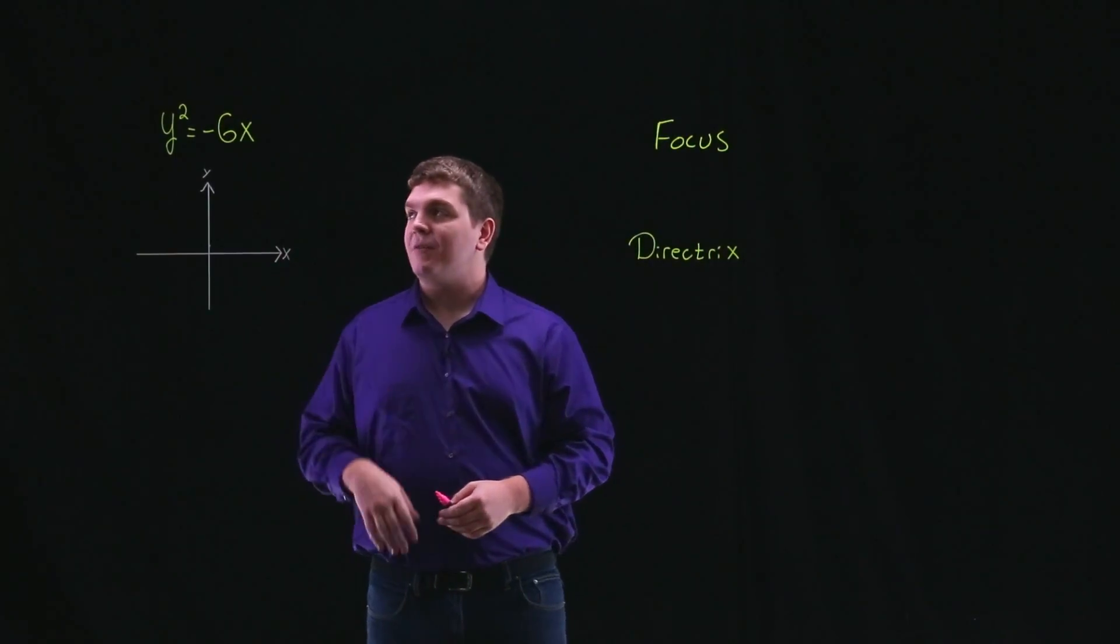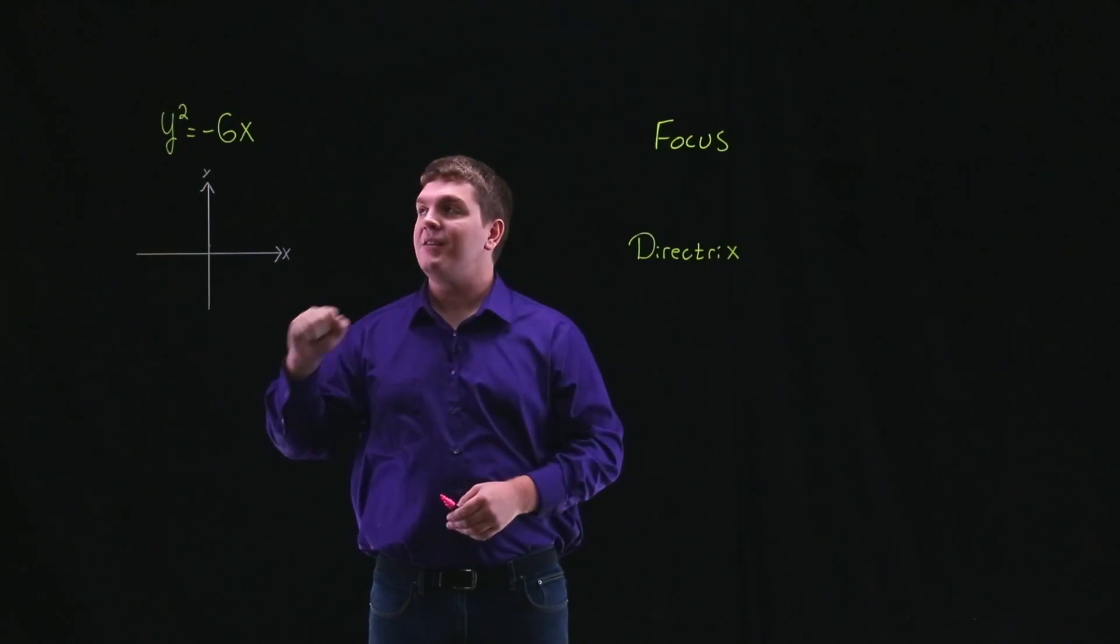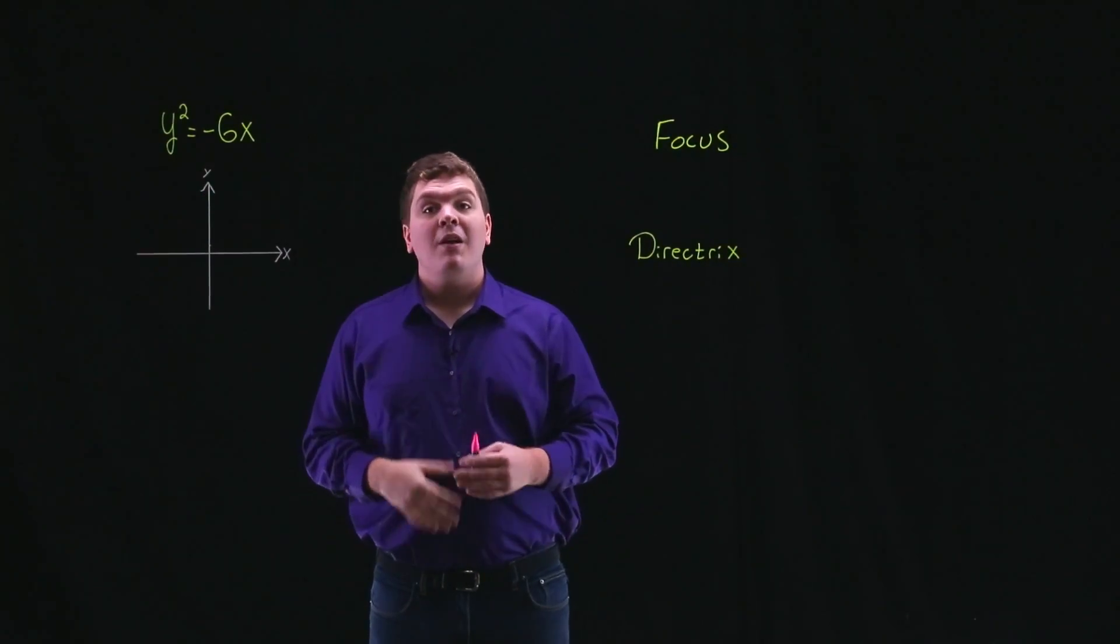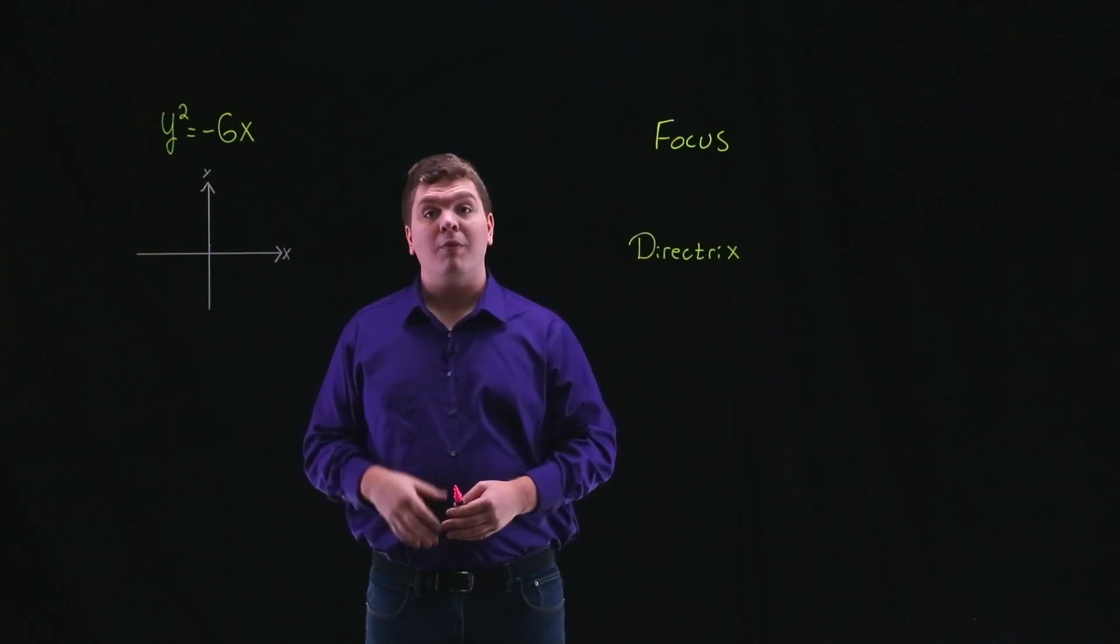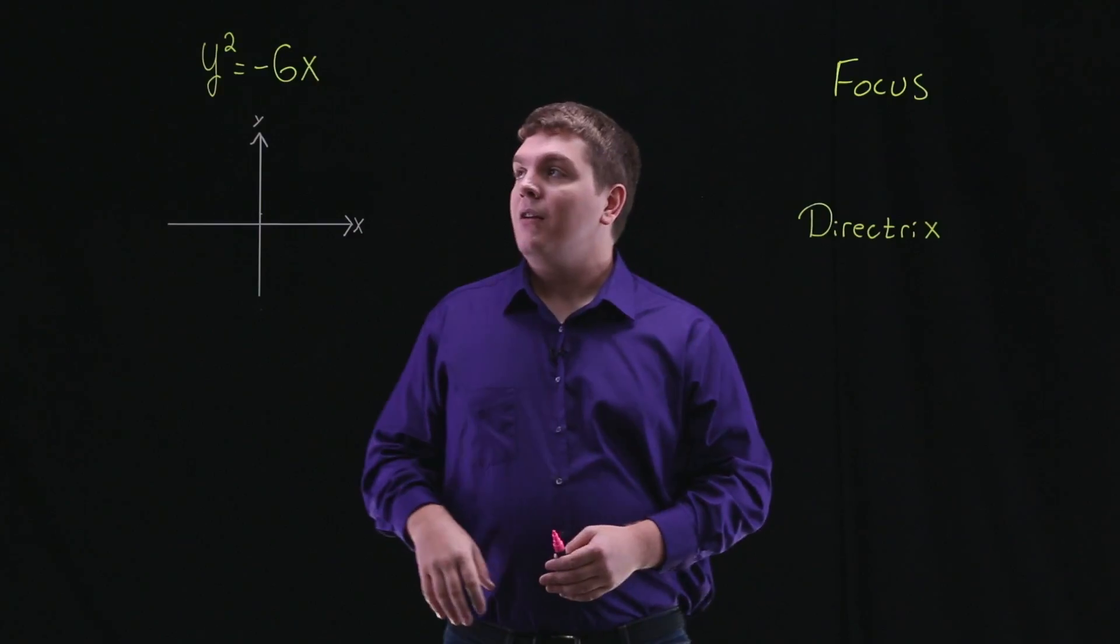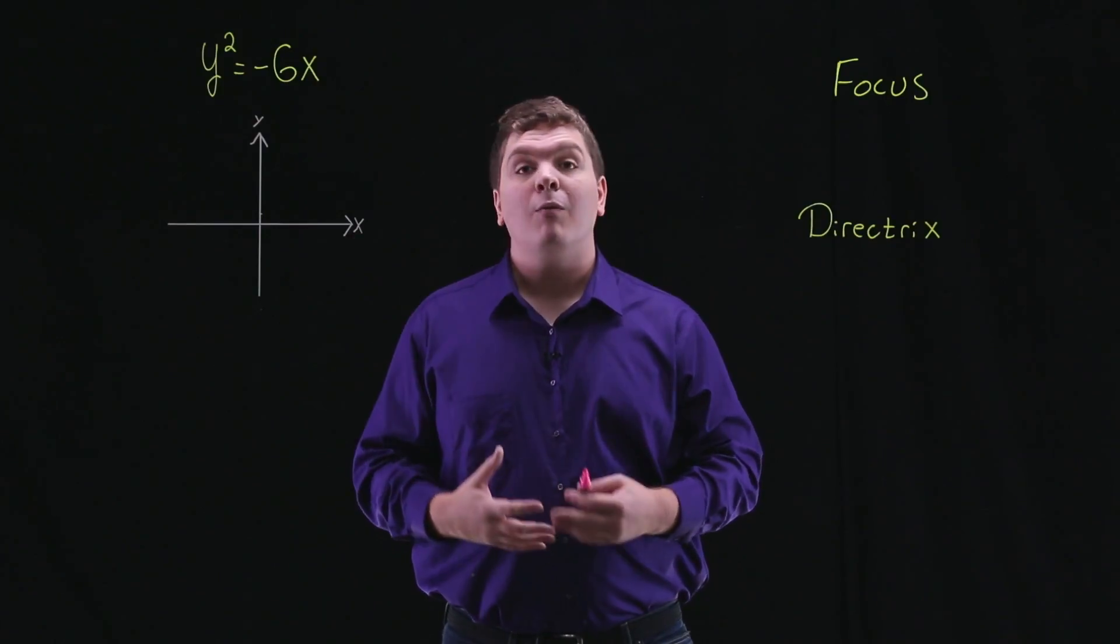So just by looking at this equation, since it's y² = -6x, you might notice that this parabola is going to open towards the left. We'll verify that when we solve for p.